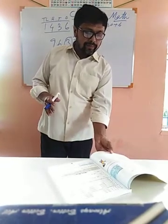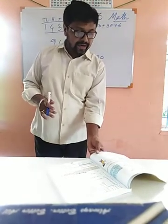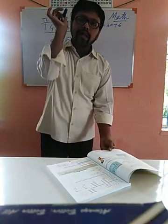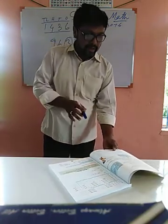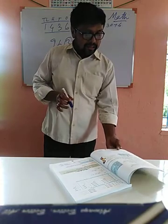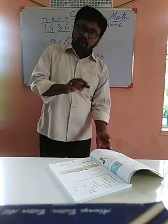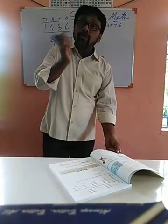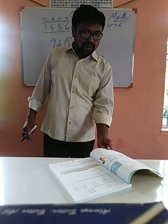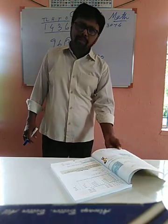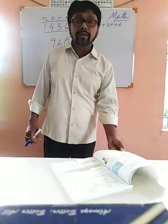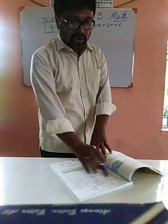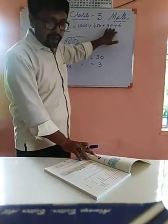Next, write the face value and place value of the digits in the ring. For two four five six: the face value is only the number itself, so it is six, and the place value is also six because it is in the ones place. For three seven two six: the face value of seven is seven itself, but the place value is seven hundred. So write all these things and also write in expanded form.